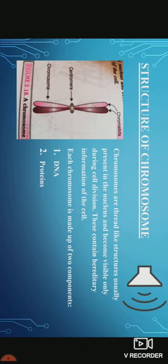Each chromosome is made up of two components: DNA and proteins. DNA is the most important component of a chromosome. In eukaryotes, chromosomes can only be seen during cell division, mitosis and meiosis. These look like rods during the metaphase stage of cell division.